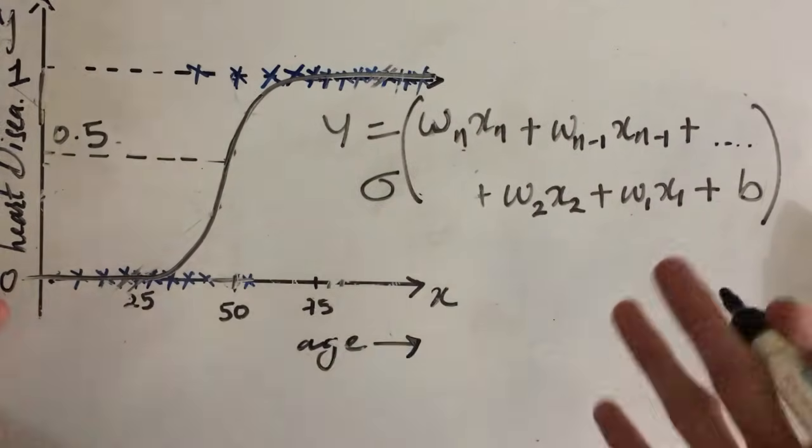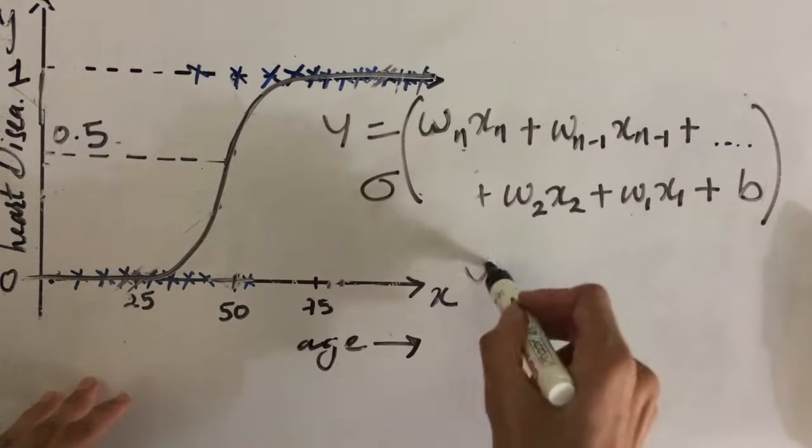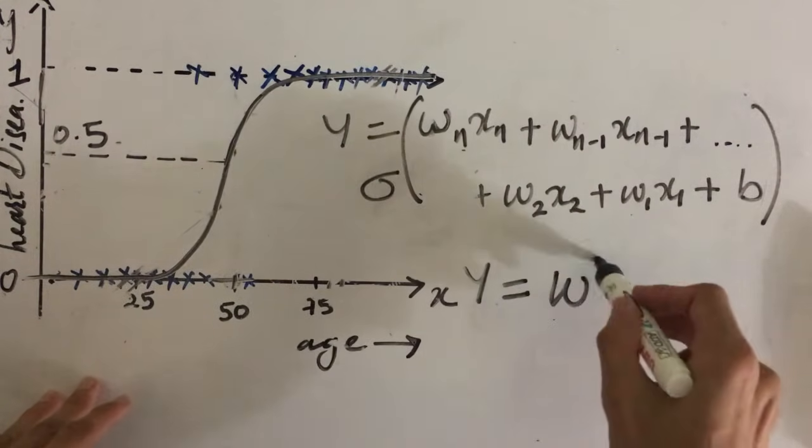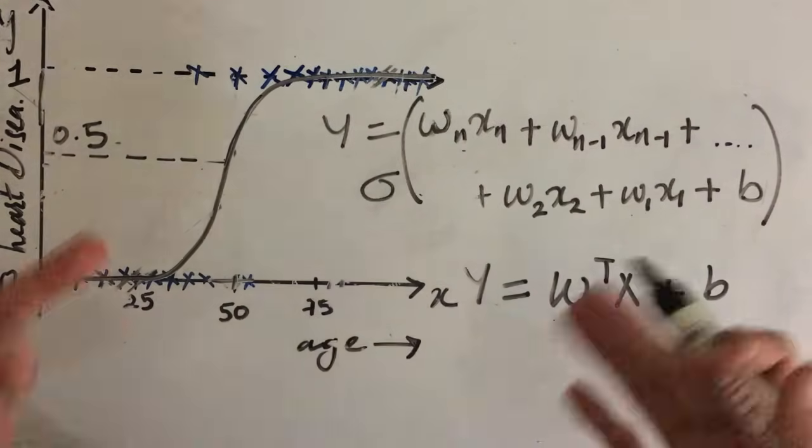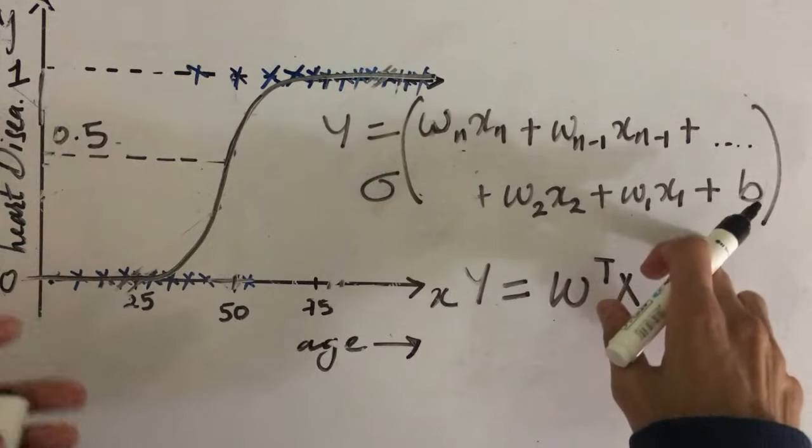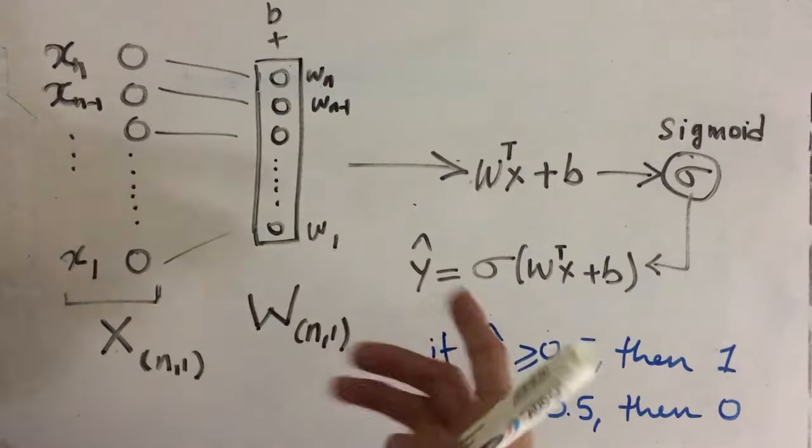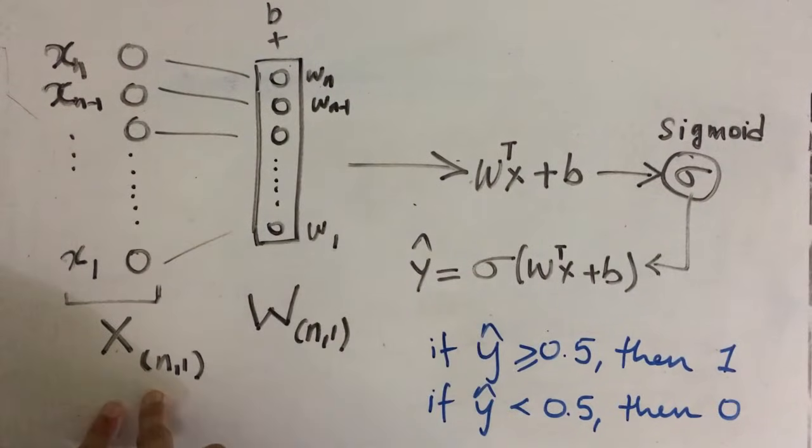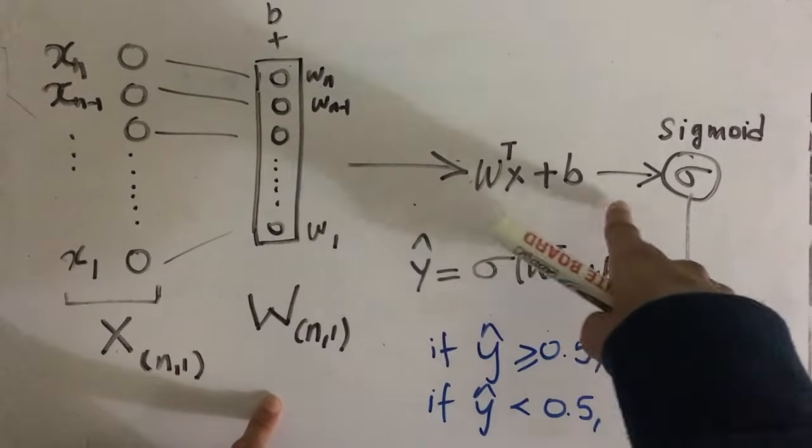Now we just have to apply sigmoid over this equation and we can make predictions for any dataset with any number of features. We can also represent this equation in the form of matrix as y equals to w transpose x plus b. Now this w represents the matrix of all these w's and it is of the shape n comma 1. In other words, we can pass this input feature vector with our weights and b to get w transpose x plus b.